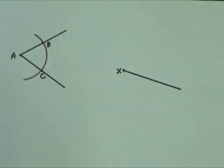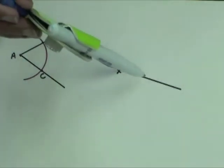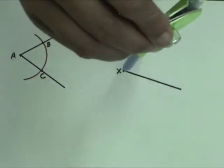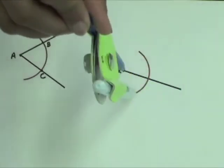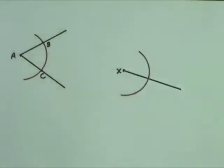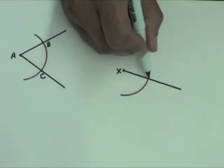Without changing the compass width, move the compass point to X and draw an arc that intersects the half line. Label the point of intersection as Z.